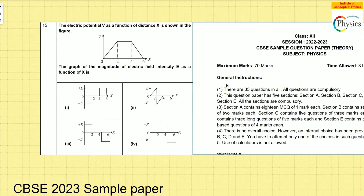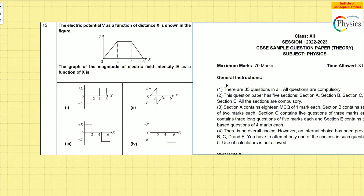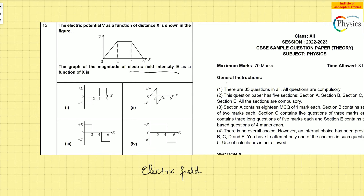Good morning, another question from a CBC sample question paper. This question is on the topic of electric field and potential gradient. If you see any question like this in which you find a graph of V and x, the topic generally involves electric field expressed as a gradient of potential. I will explain what it means.